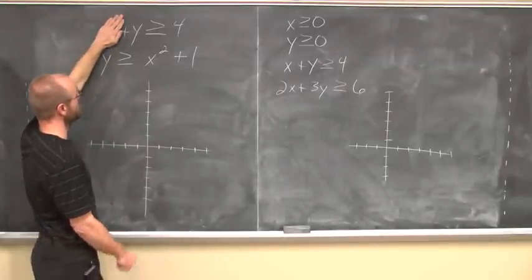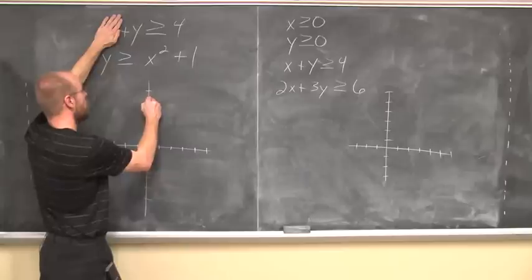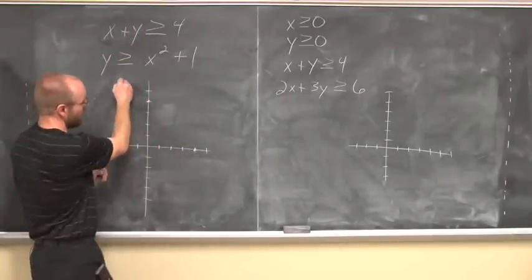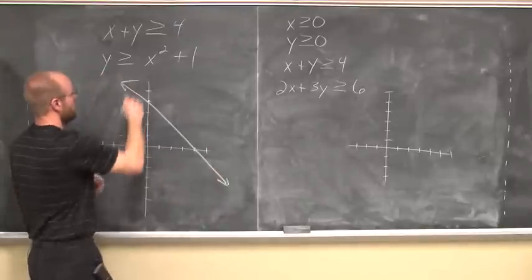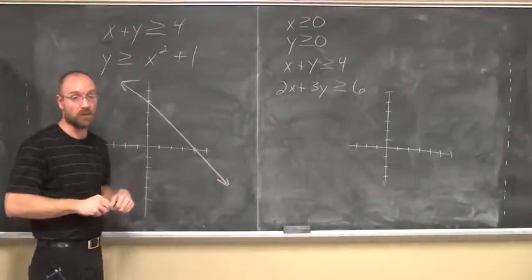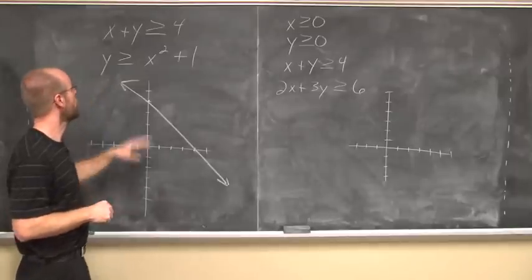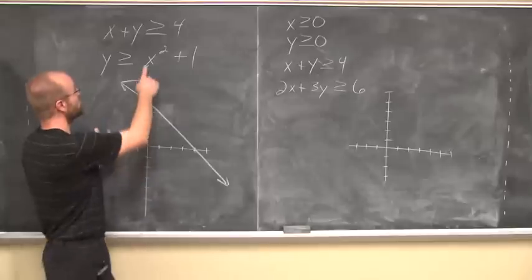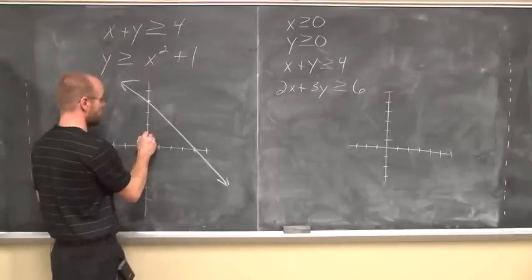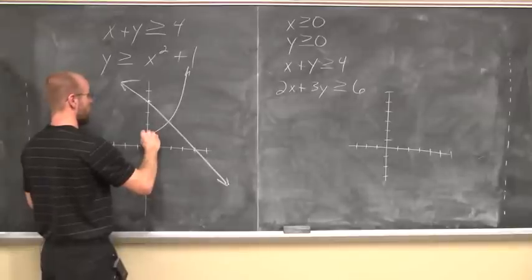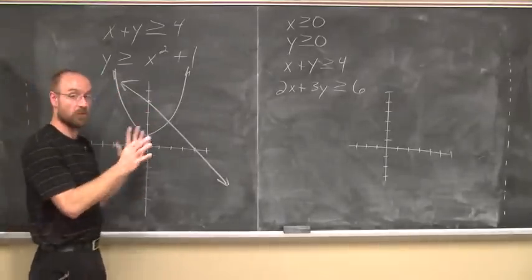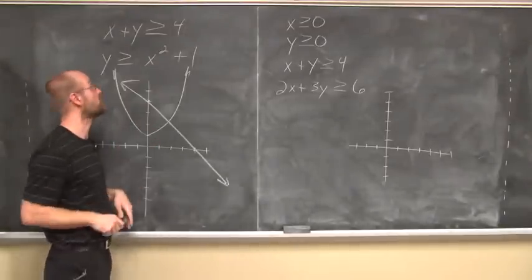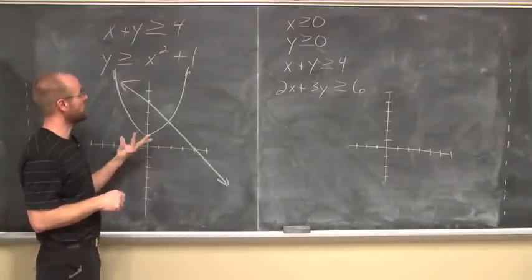I'm just going to use the intercepts. When x is 0, y is 4; and when y is 0, x is 4. So now I have two points, I know it's a solid line, and I'm going to go ahead and graph it. That's my line representing x plus y is greater than or equal to 4. Now I'm going to graph my parabola. This is a parabola shifted up 1 that opens up, so its vertex is (0, 1). I'm just going to graph this, and hopefully my sketch is relatively accurate — plot some specific points if you want more precision.